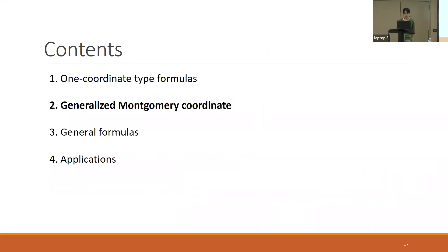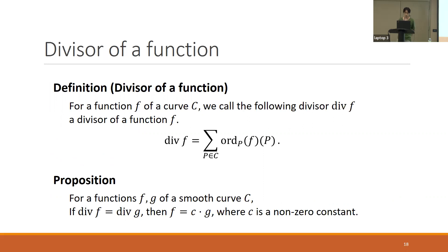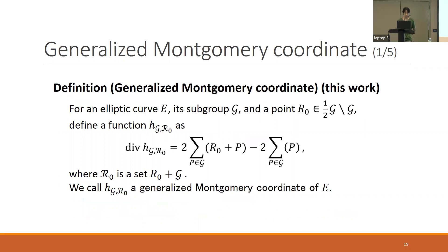So we introduce the generalized Montgomery coordinate. Before defining it, I explain about the divisor of a function. For a function f over a curve C, we define the divisor of the function. An important property is: for functions f and g, if their divisors are equal, then there is a constant value c such that f equals c times g. Now, for an fd-curve E, a subgroup G, and a point r₀ in a given set, we define the function h_{G,r₀} satisfying a certain divisor property. We call this function a generalized Montgomery coordinate of E.